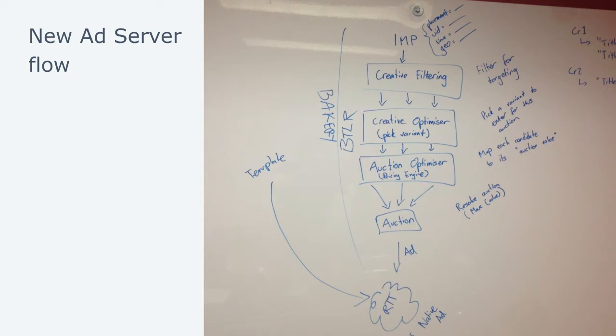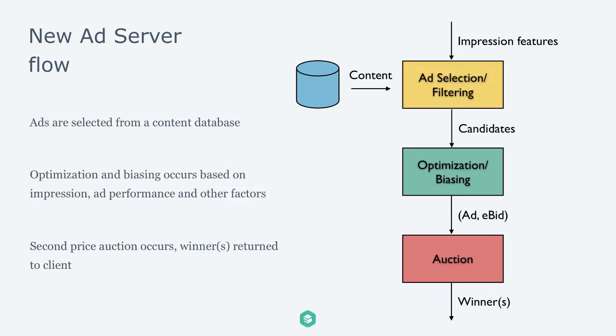This was inspired by an open house session in this building very soon after Twitter moved here. The architecture slide showed a content database providing ads, then ad selection and filtering — which is a recommendation problem — then an optimization biasing system to do with ad performance, converting the advertiser's bid into an auction weight or utility. Then the auction itself is a pricing engine: it takes that information and determines who wins, how much they pay, and all that.